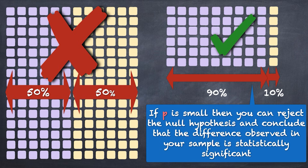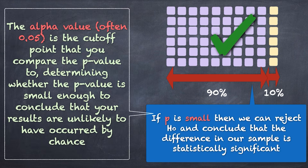But what do we mean by small? How small is small enough to reject the null hypothesis? Before we do our statistical test, we decide on a cutoff, and we call that our alpha value. The alpha value is the cutoff point that you compare your p-value to, to determine whether the p-value is small enough to conclude that your results are unlikely to have occurred by chance. Now let's take a look at how to apply the principles of hypothesis testing and interpreting the p-value for the t-test, the chi-square test, ANOVA, and the correlation test.